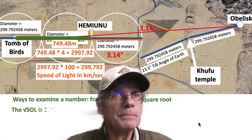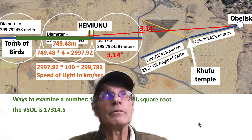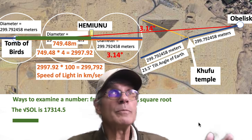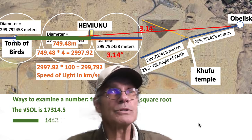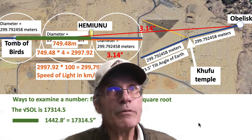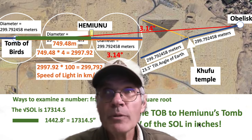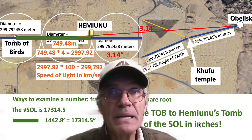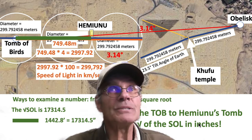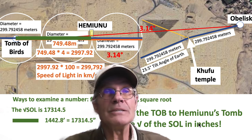The square root of the speed of light is 17,314.5. Well, that green line up there between the Tomb of the Birds and Hemiya's tomb is 17,314.5 inches. It's unbelievable. From the Tomb of the Birds to Hemiya's tomb is the speed of light square root in inches — 17,314.5 inches. The mysteries of Egypt.